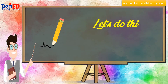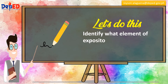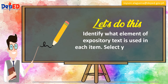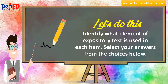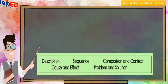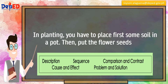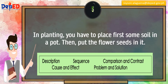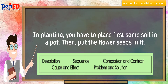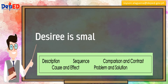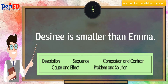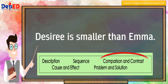Let's do this. Identify what element of expository text is used in each item. In planting, you have to place first some soil in a pot, then put the flower seeds in it. This is a sequence. Desiree is smaller than Emma. This is a comparison and contrast.